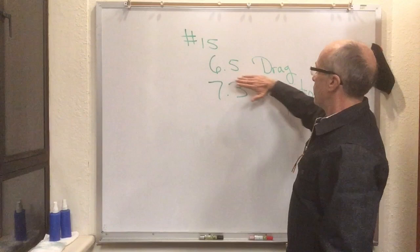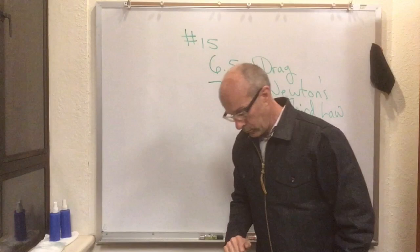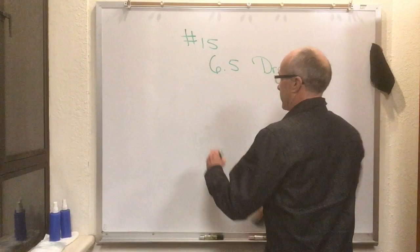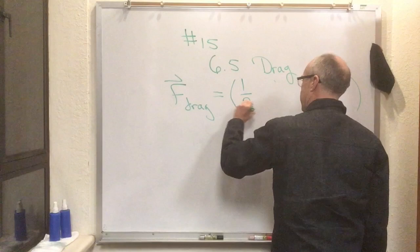This is flipped mini lecture number 15. First thing we're going to cover is drag, a little like friction but not exactly. Then we're going to pop all the way up to 7.3, Newton's third law. So first, drag. The formula for drag is F_drag, which has a magnitude and a direction.